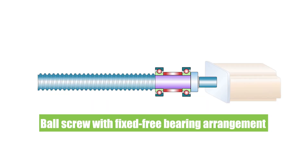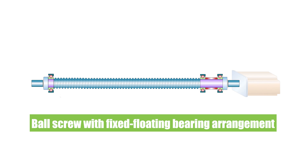The rigidity of the screw shaft depends on its cross-sectional area, its modulus of elasticity — which is a function of the material — and the distance between the fixed bearing and the ball nut, known as the unsupported length.